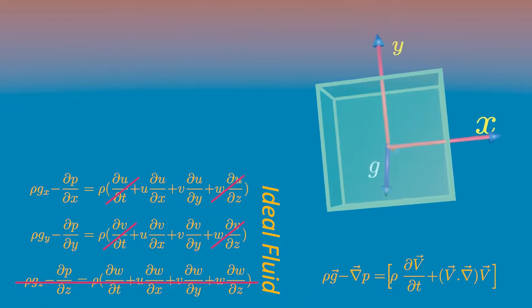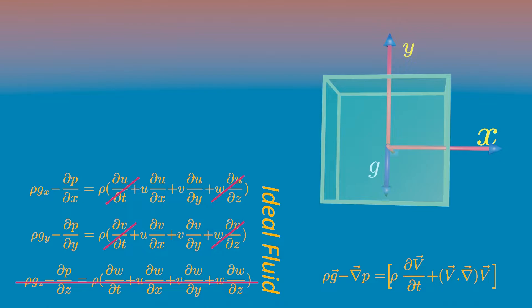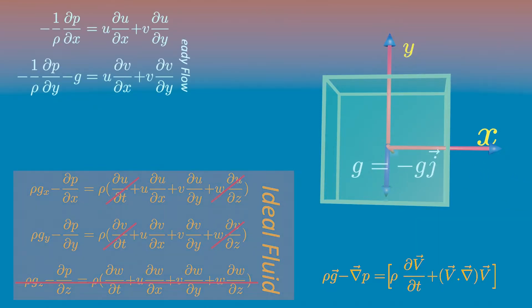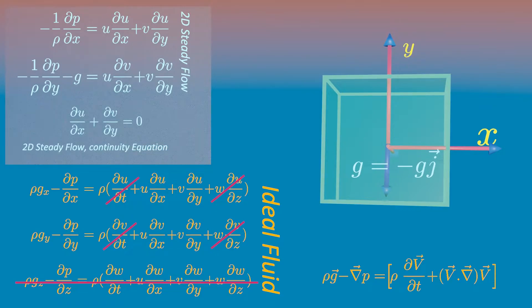Now, if we orient the x and y axes so that gravity acts on y coordinate only then, Euler's equations become... The velocity components u and v, and the pressure p, at any point within the fluid can now be determined, provided we can solve these two partial differential equations, along with the continuity equation.